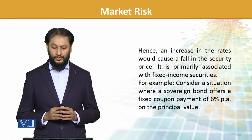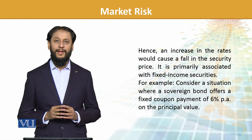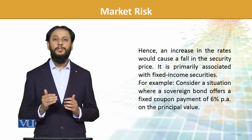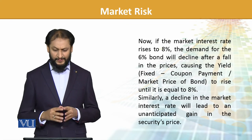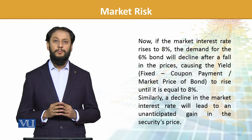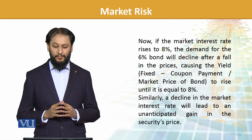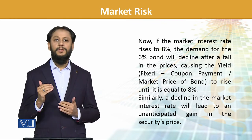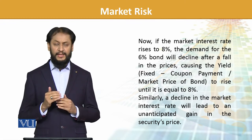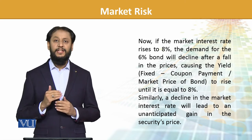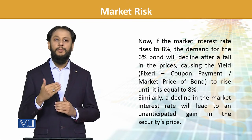For example, consider a situation where a sovereign bond offers a fixed coupon payment of 6% on the principal value. Now, if the market interest rate rises to 8% — remember we were offering 6% — demand for the 6% bond will decline, because when an 8% bond is available, the need and demand for the 6% bond will fall. This causes its yield to rise until it equals 8%, meaning the return on the bond must increase to offer 8%.